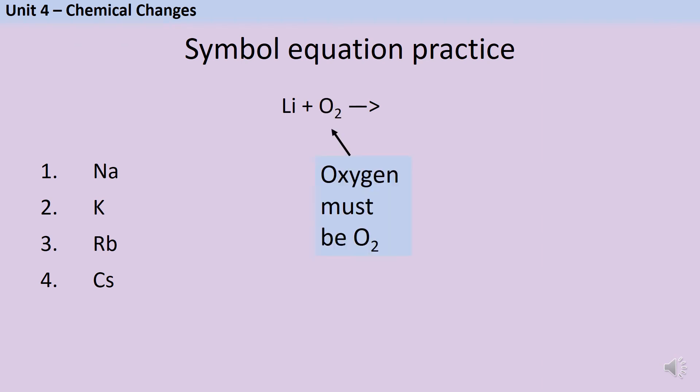Now unlike the Group 2 elements that we just looked at, Group 1 elements form ions with a single positive charge. And this means that when they react with oxygen, they always form a compound in a 2 to 1 ratio. So in this instance, that's going to be Li2O.